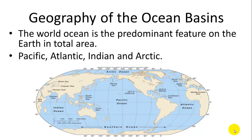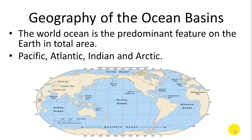Starting with geography: there are four major bodies of water called oceans — Pacific, Atlantic, Indian, and Arctic. There is also the Southern Ocean, which surrounds Antarctica but is essentially the southern portion of the Pacific, Indian, and Atlantic Oceans.